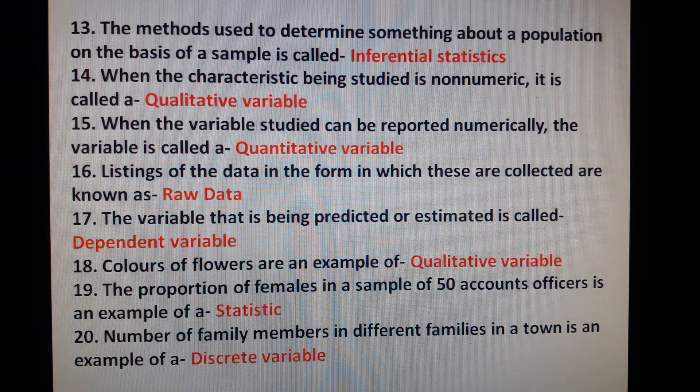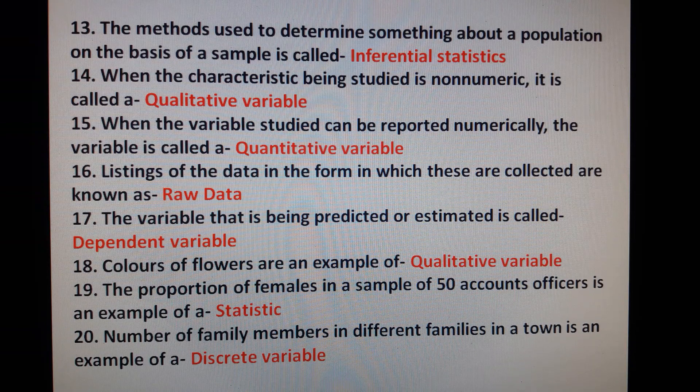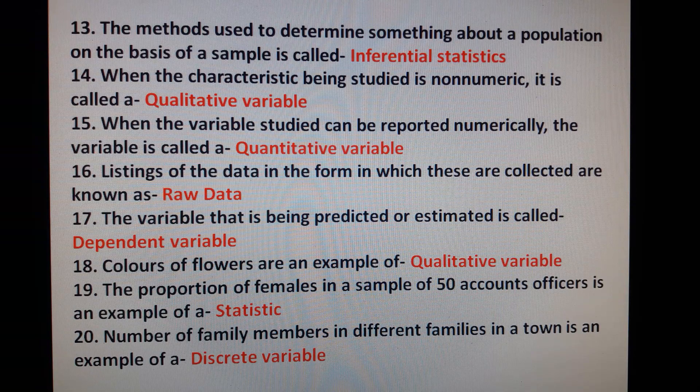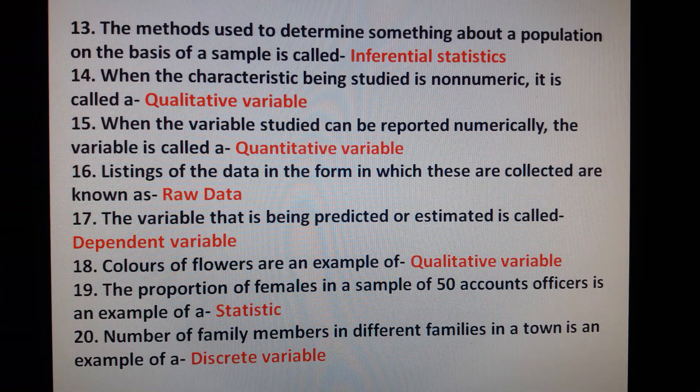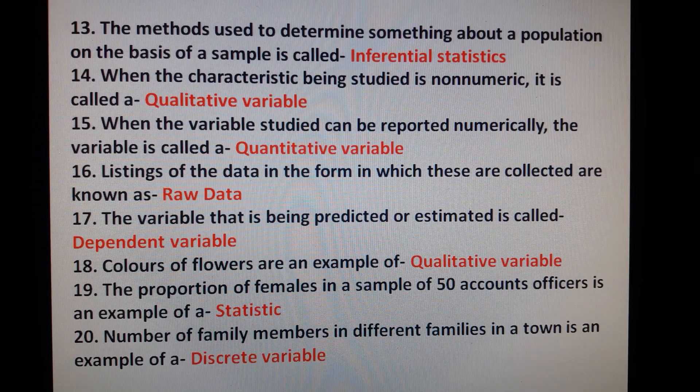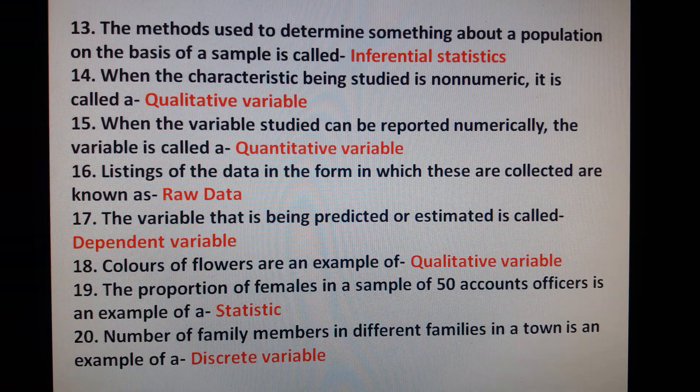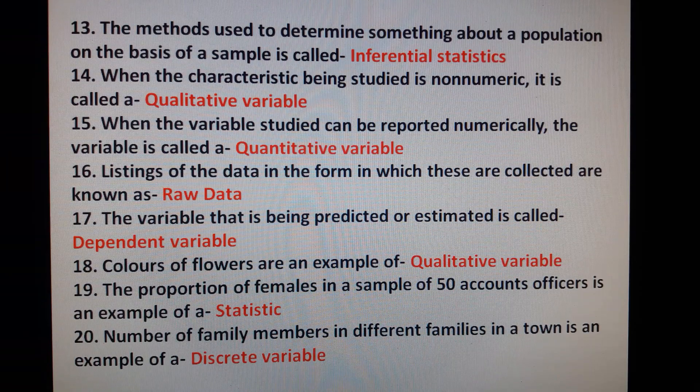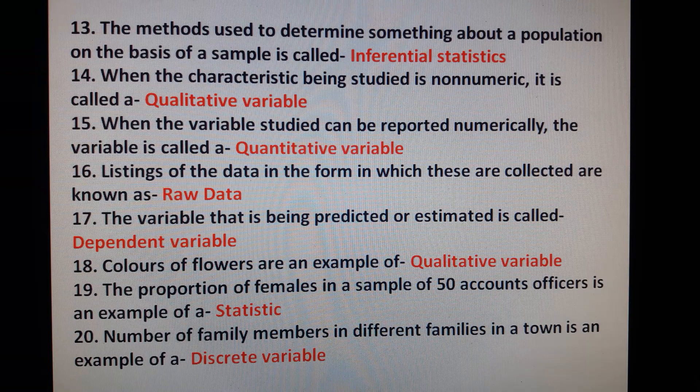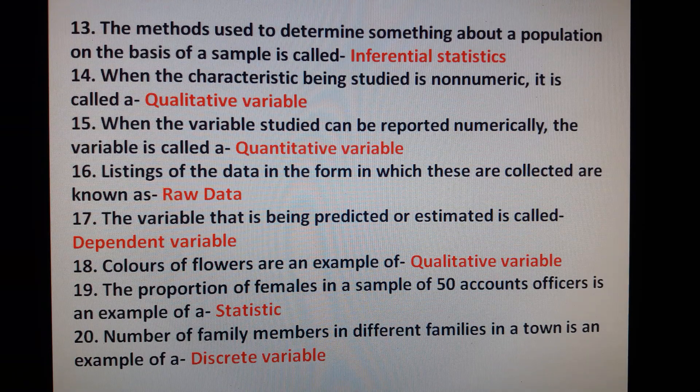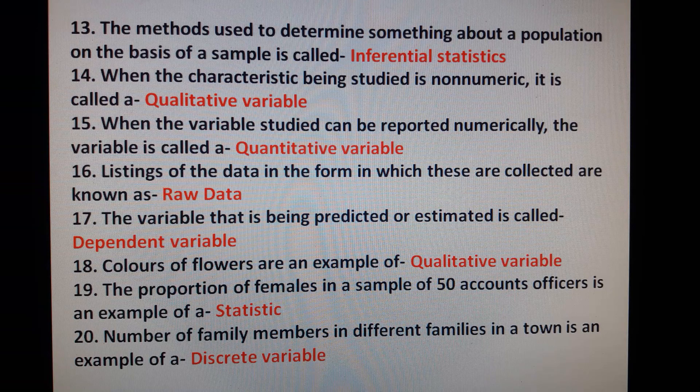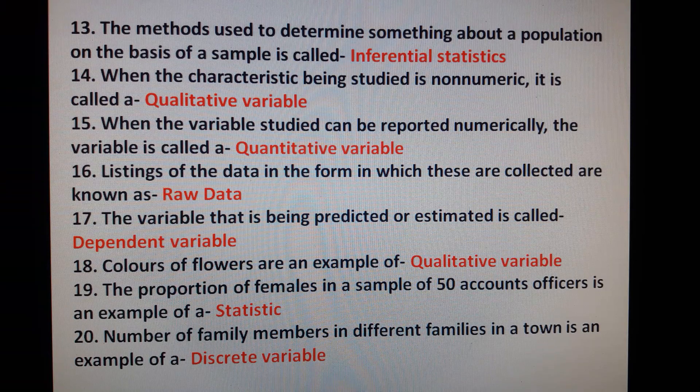17. The variable that is being predicted or estimated is called dependent variable. 18. Colors of flowers are an example of qualitative variable. 19. The proportion of females in a sample of 50 accounts officers is an example of statistics. 20. Number of family members in different families in a town is an example of a discrete variable.